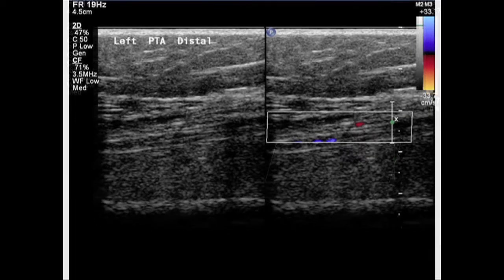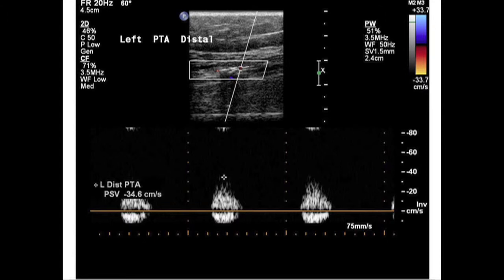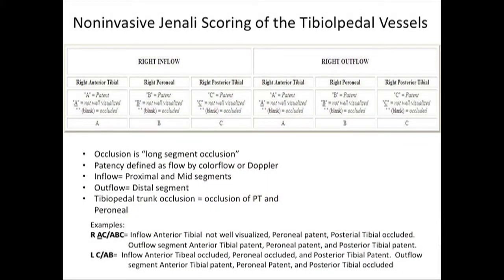Based on Dr. Mustafa's paper describing GENELY scoring on angiography, we're now doing a proof of concept for GENELY scoring below the knee with ultrasonography — grading inflow and outflow. In this scoring system, occlusion is a long-segment occlusion, patency is defined by presence of color flow or Doppler signal, outflow is the distal segments, inflow is the proximal and mid segments, and the tibio-peroneal trunk occlusion is defined as occlusion of both the posterior tibial and peroneal arteries.